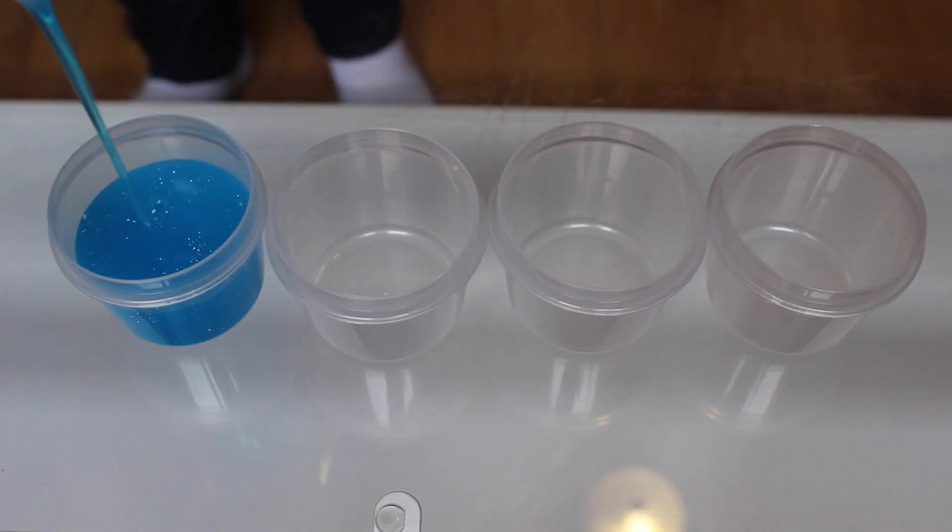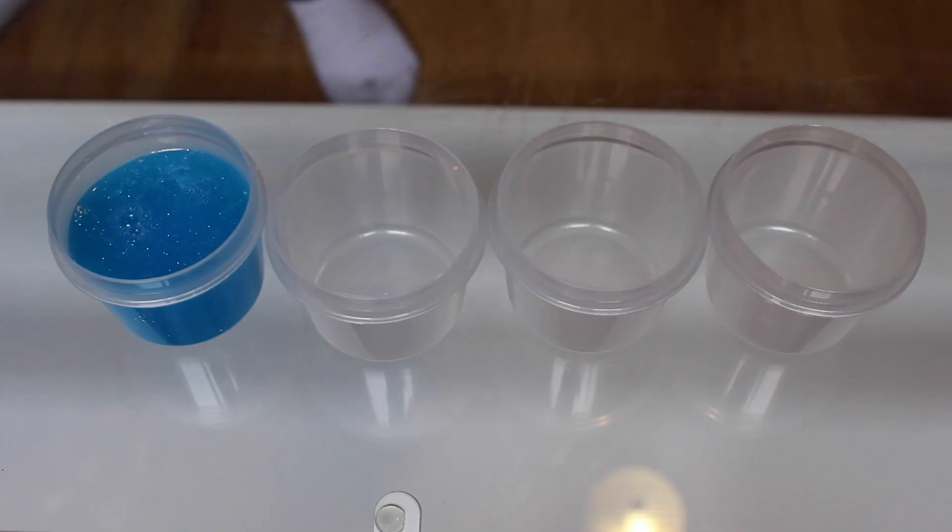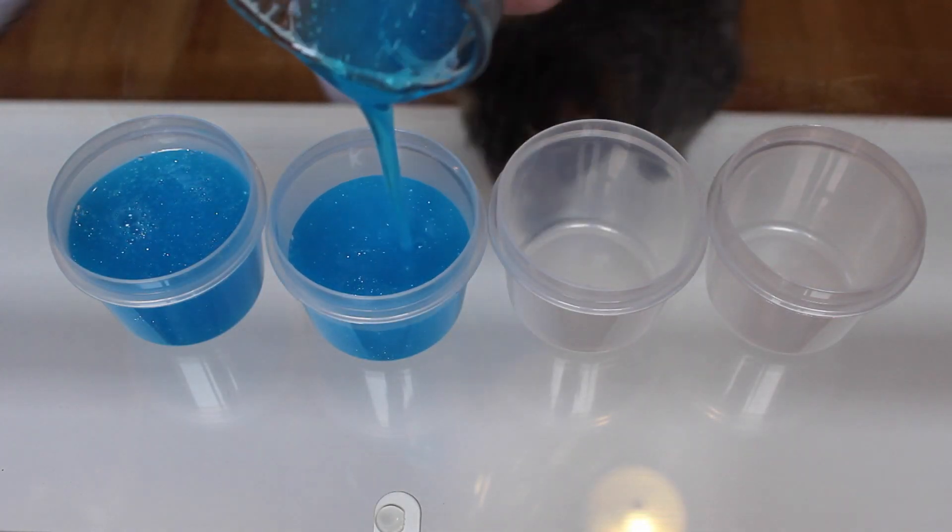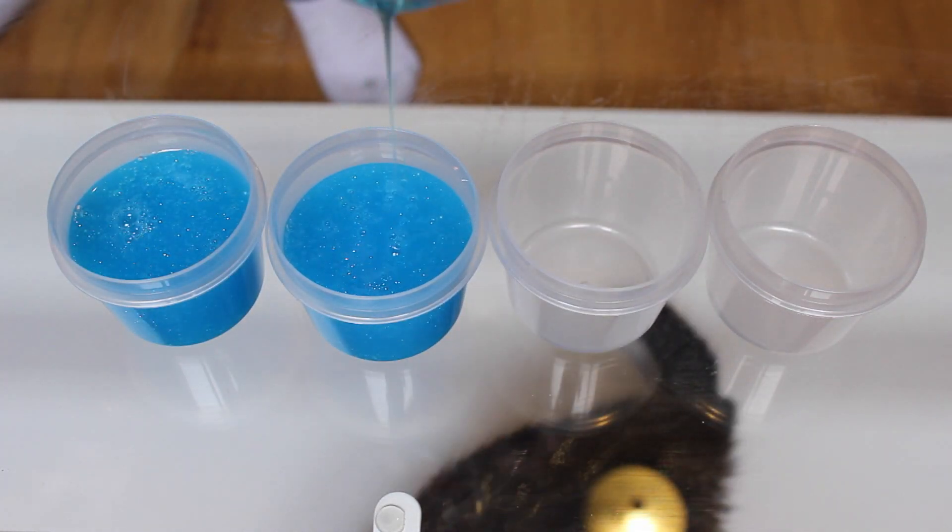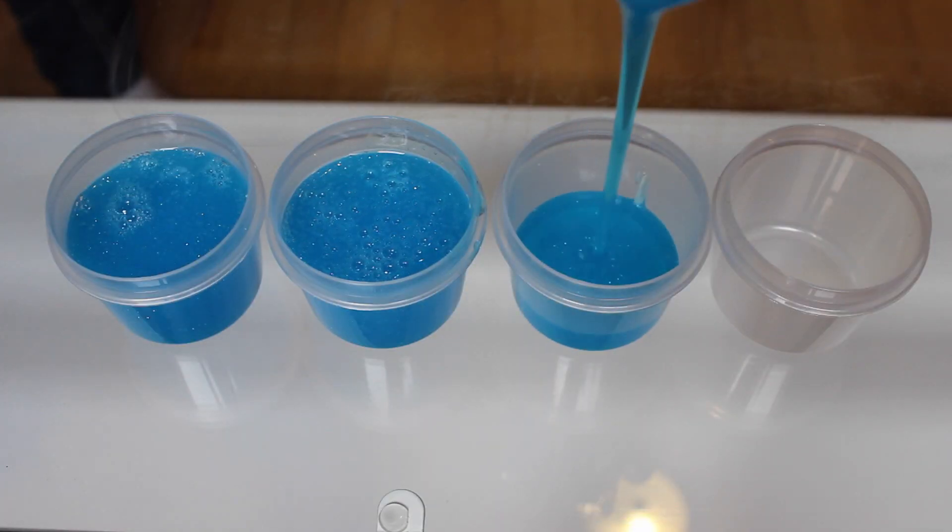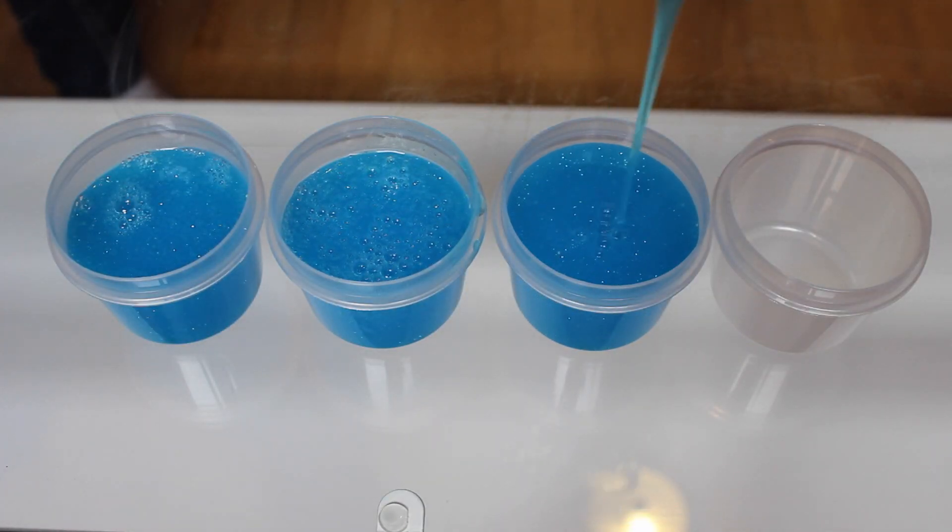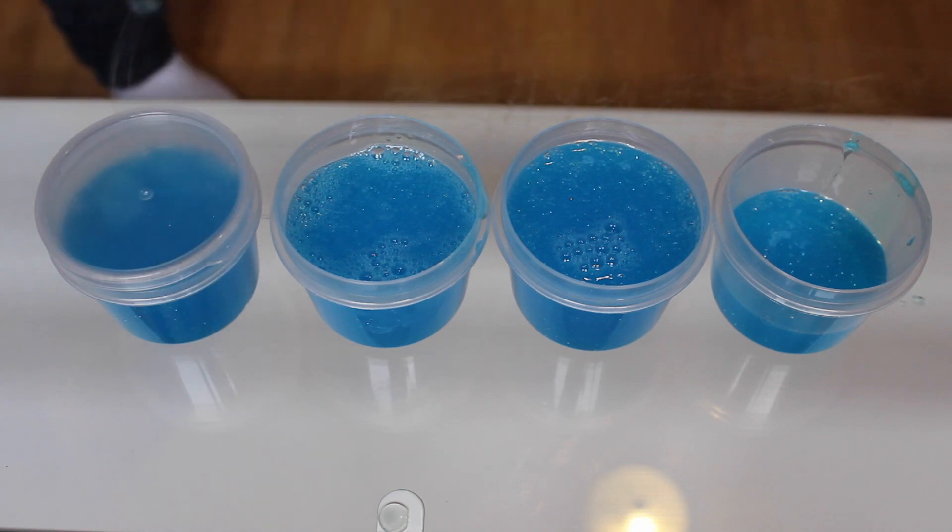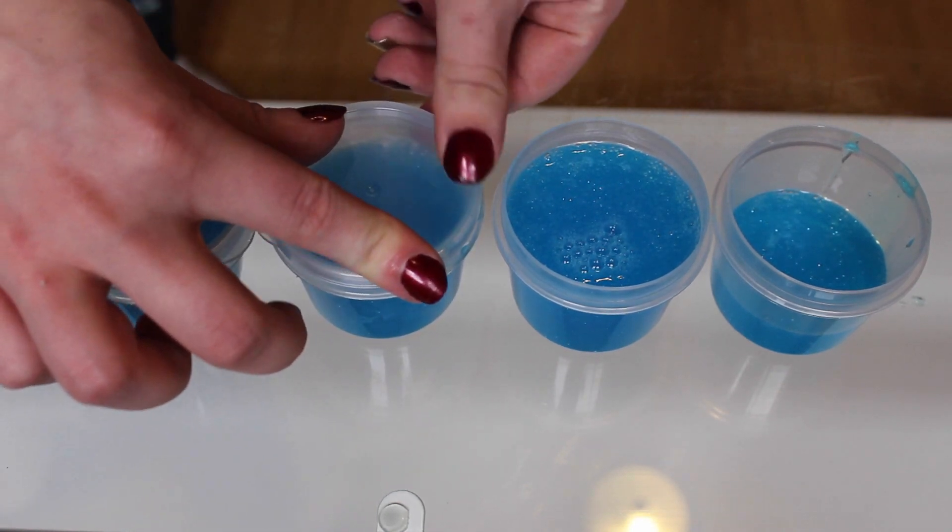Now it's time to pour it into whatever container you would like. I just chose these cheap salad dressing containers from the dollar store. When they're plastic it makes it really easy to remove it from the mold once they've set. Now put the lids on and you're only going to need about two hours with these in the fridge.